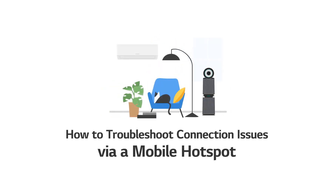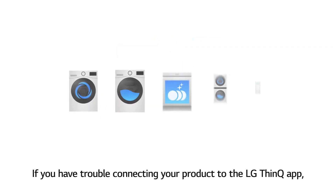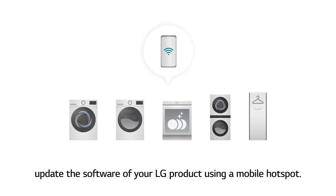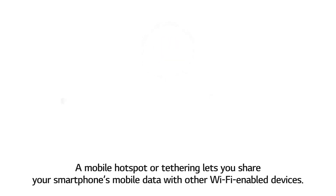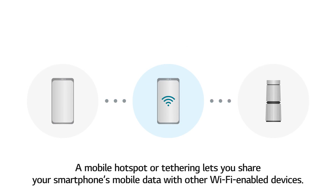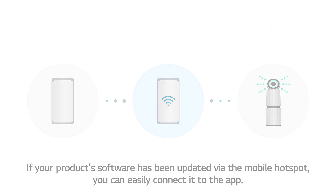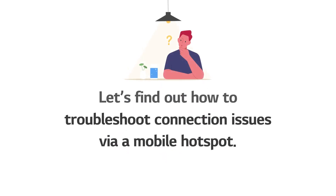How to Troubleshoot Connection Issues via a Mobile Hotspot. If you have trouble connecting your product to the LG ThinQ app, update the software of your LG product using a mobile hotspot. A mobile hotspot or tethering lets you share your smartphone's mobile data with other Wi-Fi enabled devices. If your product's software has been updated via the mobile hotspot, you can easily connect it to the app.